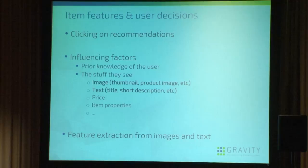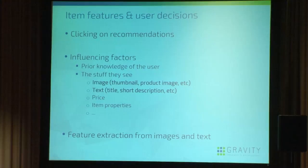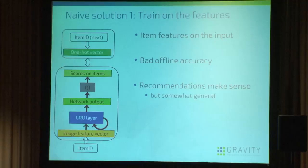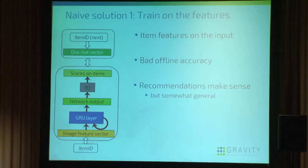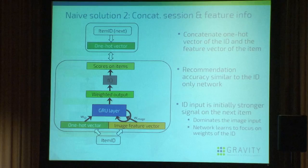At this point I won't tell you how we extract the feature vector from the image or text — I will talk about that later. Let's assume we have a dense vector that is a representation of the item's image and see how we can use it in the recurrent neural network. The naive solution is to replace the one-hot encoded item ID on the input with this image feature vector but otherwise leave the network as it was. This has very bad offline accuracy in terms of recall and MRR. The recommendations make sense but are somewhat too general — if you looked at blue cars, you get blue cars recommended, but brands aren't considered and it's a bunch of different types from varying price ranges.